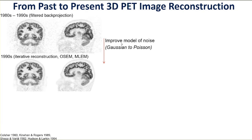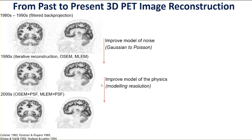If we upgrade to the iterative procedure, we change from the Gaussian model implicit in filtered back projection to a Poisson noise model — and iterative reconstruction, ordered subsets EM or maximum likelihood EM, notably reduces noise especially in low-activity regions. Furthermore, we can not only improve the noise model but also the model of the physics. In PET imaging, a successful technique was to build in modelling of the positron range or point spread function, improving the spatial resolution of images. That takes us to about year 2000.